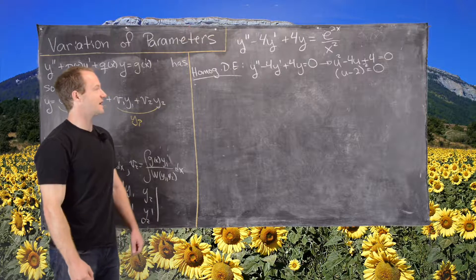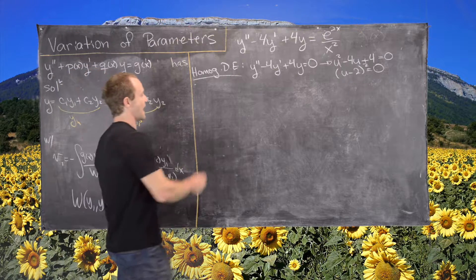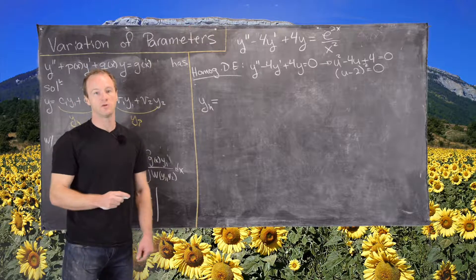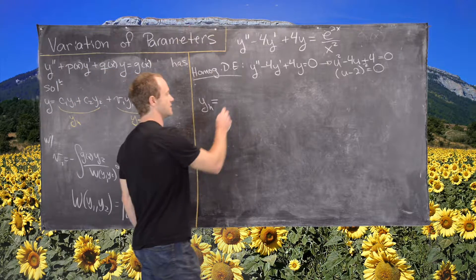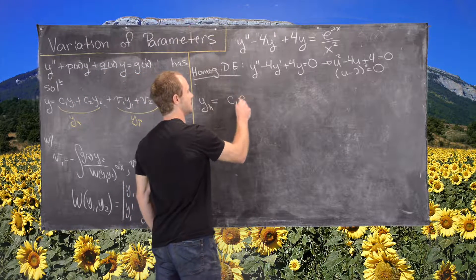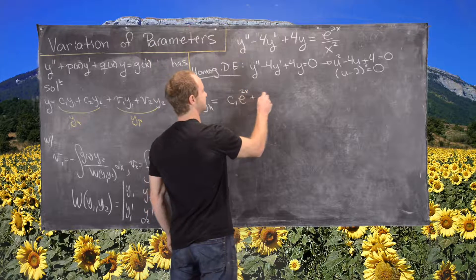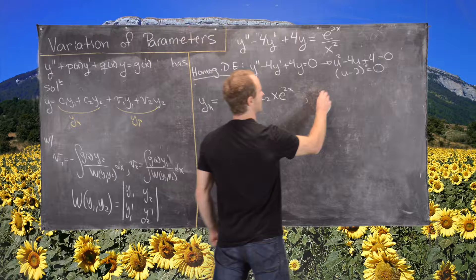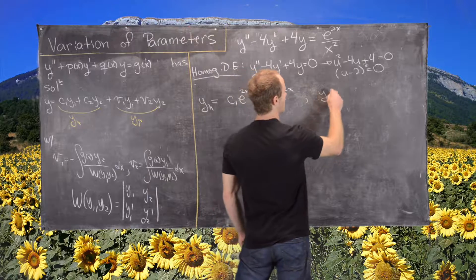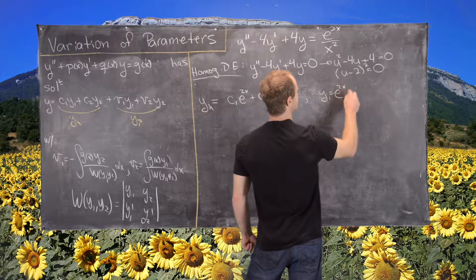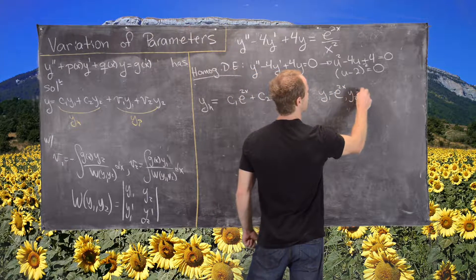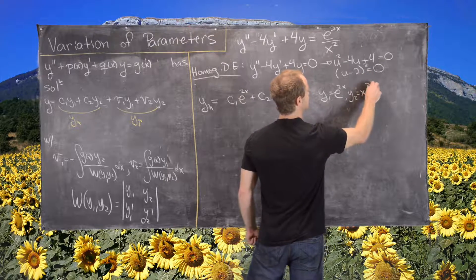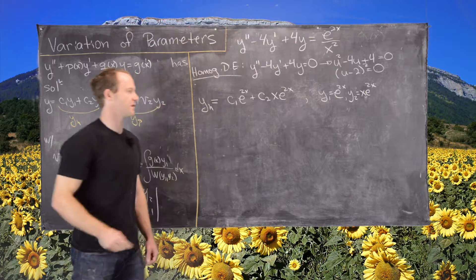Notice that u squared minus 4u plus 4 factors as u minus 2 squared equals 0, giving a repeated root at u equals 2. So the corresponding homogeneous solution is c1 e to the 2x plus c2 x e to the 2x, meaning y1 equals e to the 2x and y2 equals x e to the 2x.